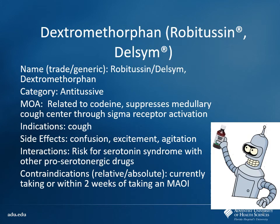The other big one you're going to see used most commonly, at least over the counter, is dextromethorphan — otherwise known as Robitussin. You also see it as Delsym. Anyone know why I put Bender the robot here? Robo-tripping.